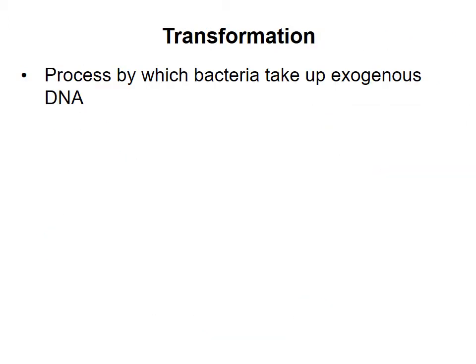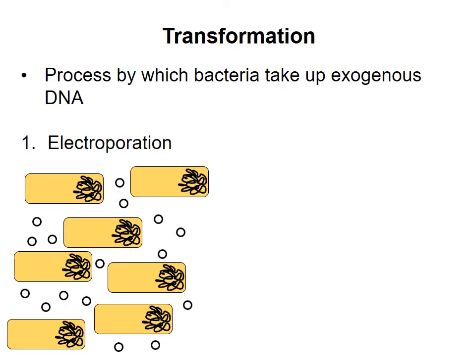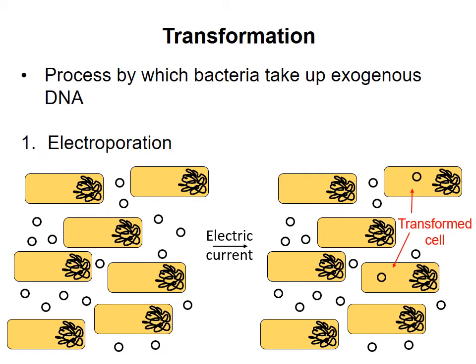The process by which a plasmid is introduced into bacteria is called transformation. There are two main ways to transform bacteria. In electroporation, you mix the plasmid and your bacteria under certain conditions, then expose the cells to an electric current. This causes some of the cells to take up the plasmid.